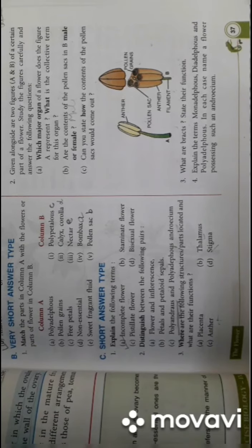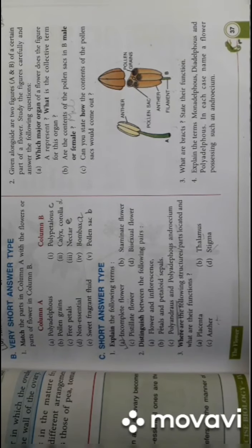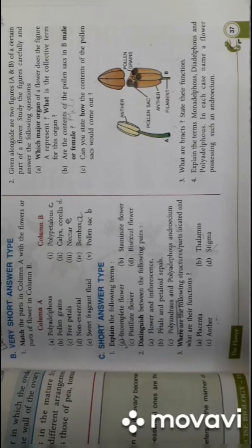Petals and petaloid sepals. Petals - that is the corolla - represents the colored part of the plant. Petaloid sepals are the sepals which are colored.